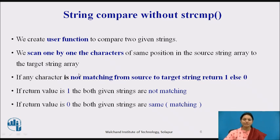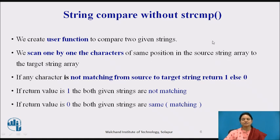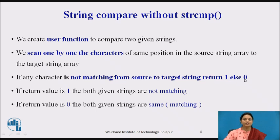Without the library function, we have to write our own program. The logic is: we will create a user function to compare two given strings. We scan characters one by one at the same position in the source string and the target string — source string means str1 and target string means str2. If any character is not matching from source to target string, it will return 1. If matching, it will return 0.